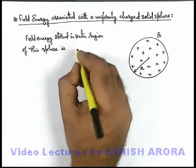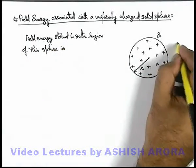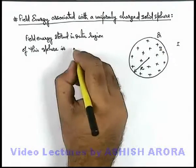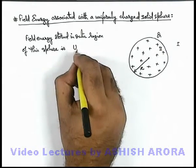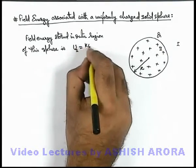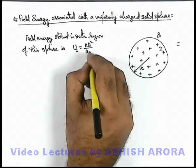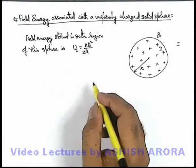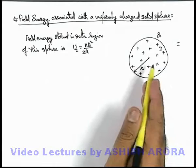So you can say if this is region 1 and this is region 2, then field energy stored in region 1 can directly be written as kQ²/2R which is the total field energy in the surrounding of a charged metal sphere.